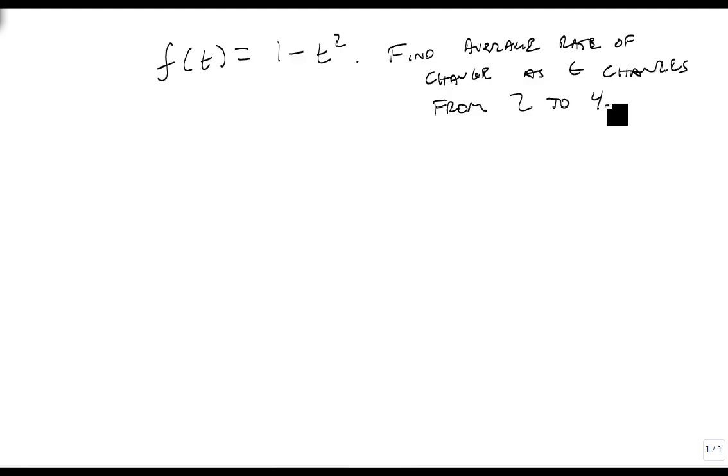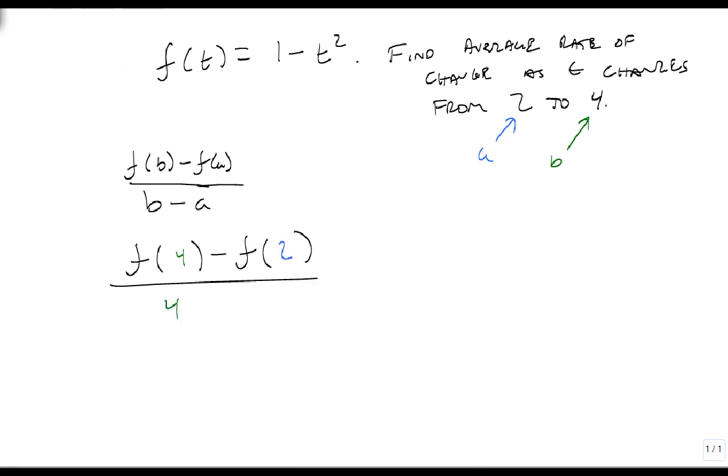So what we need to figure out, we know that this is a, and this is b. And we take our function f of b minus f of a over b minus a. So this is f of 4 minus f of 2 over 4 minus 2. Well f of 4 is equal to 1 minus 4 squared, which is 1 minus 16, which is negative 15.